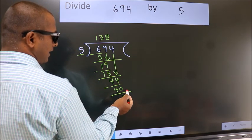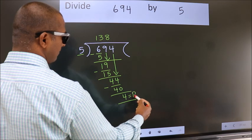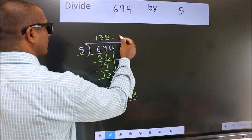No more numbers to bring down, so we stop here. This is our remainder. This is our quotient.